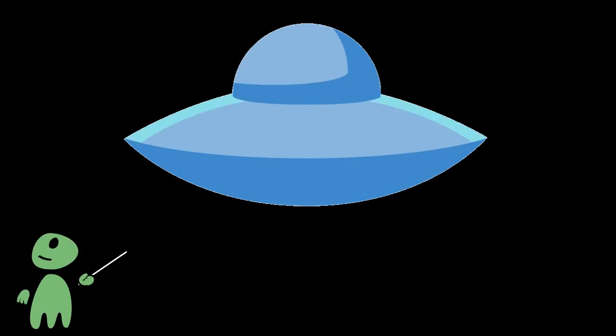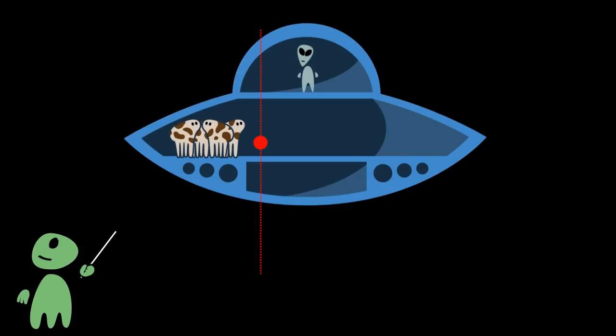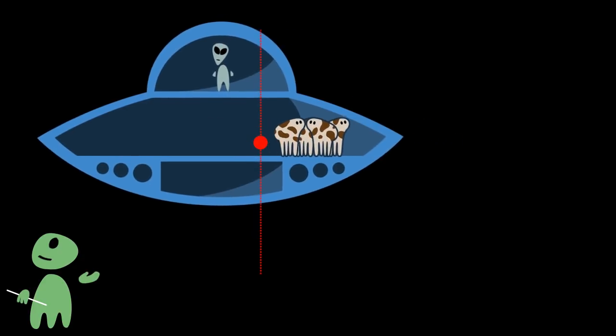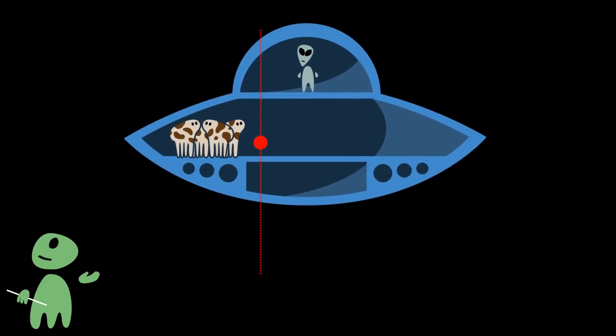The first rule of saucer physics says that a saucer will always spin around its center of mass. So, if you abduct a herd of cows and store them all on one side of the saucer, the spinning axis will be somewhere between the geometrical center and the cows. That's why you always check your cargo distribution before lifting off.